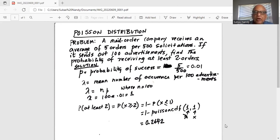And then lambda is equal to 100 multiplied by probability of success, which is 0.01, equals 1. So lambda, the mean number of occurrences per 100 advertisements, or mean number of orders per 100 advertisements is 1.